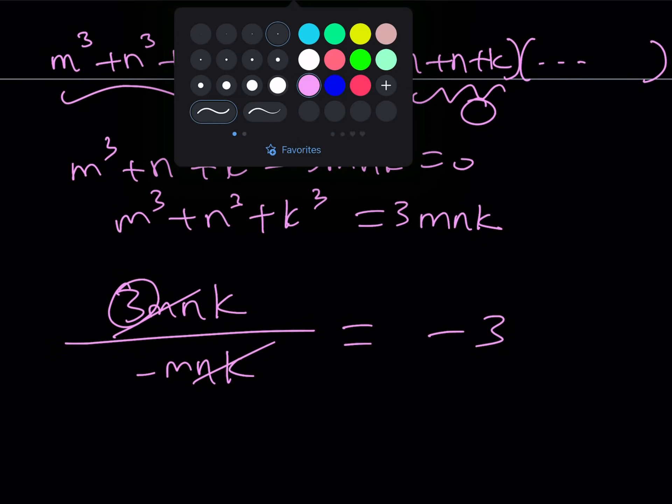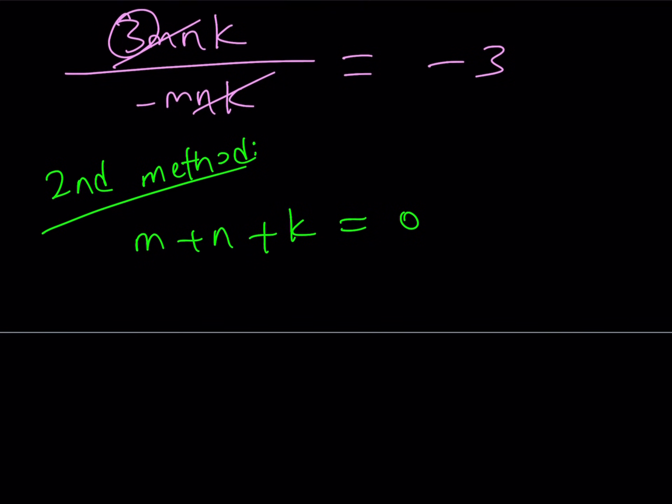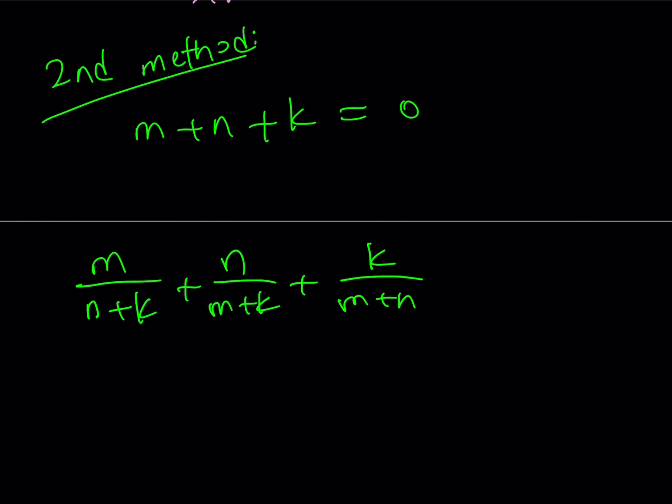So the answer is negative 3. But let's go ahead and take a look at the second method because the second method is more fun. The first method is a little painful. Why did I introduce that first? Because no pain, no gain. So let's go ahead and take a look at this. Now, we know that M plus N plus K is equal to zero. And we're trying to evaluate something like this: M over N plus K plus N over M plus K plus K over M plus N. Now, what is that supposed to mean? Well, if the sum of these three terms is zero, then you can basically say that N plus K is going to equal negative M. This is going to be negative N, and this is going to be negative K, which gives us negative 1 plus negative 1 plus negative 1, which is equal to negative 3.